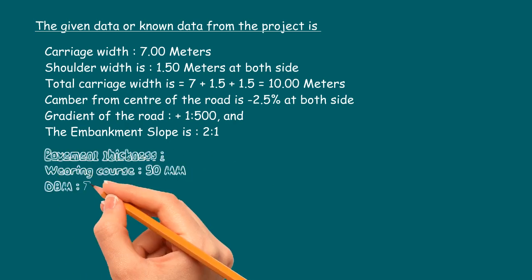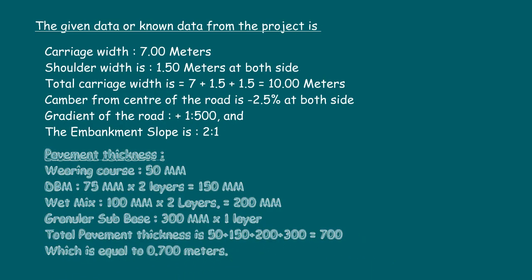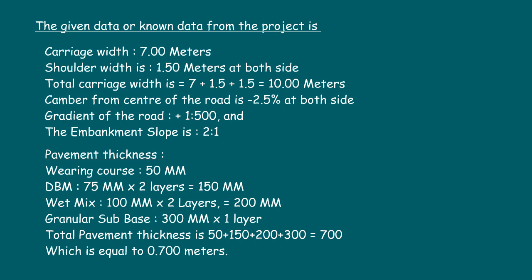The details of pavement are: wearing course 50 mm; DBM two layers of 75 mm thick, equals 150 mm; wet mix two layers of 100 mm, equals 200 mm; granular sub-base 300 mm single layer. The total thickness of pavement is 50 plus 150 plus 200 plus 300, equals 700 mm, which is equal to 0.7 meters.